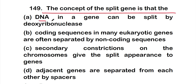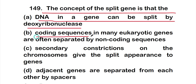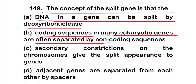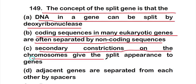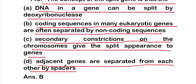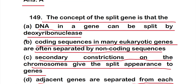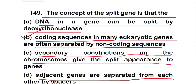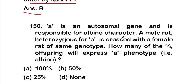Question 149: The concept of the split gene is that — option A: DNA in a gene can be split by deoxyribonuclease; option B: coding sequences in many eukaryotic genes are often separated by non-coding sequences; option C: secondary constrictions on the chromosome give a split appearance to genes; option D: adjacent genes are separated from each other by spacers. The correct answer is option B — coding sequences in eukaryotic genes are often separated by non-coding sequences.